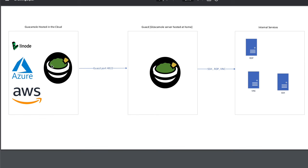So instead of using everything in the cloud and having to open up SSH, RDP, and VNC out to the internet, we only opened port 4822 for GUACD for our cloud instance to communicate with our locally hosted Guacamole server. That way we have a secure connection to our SSH, RDP, and VNC servers in our internal network, and it also saved us the problems of managing multiple port forwarding — we only had to port forward port 4822.